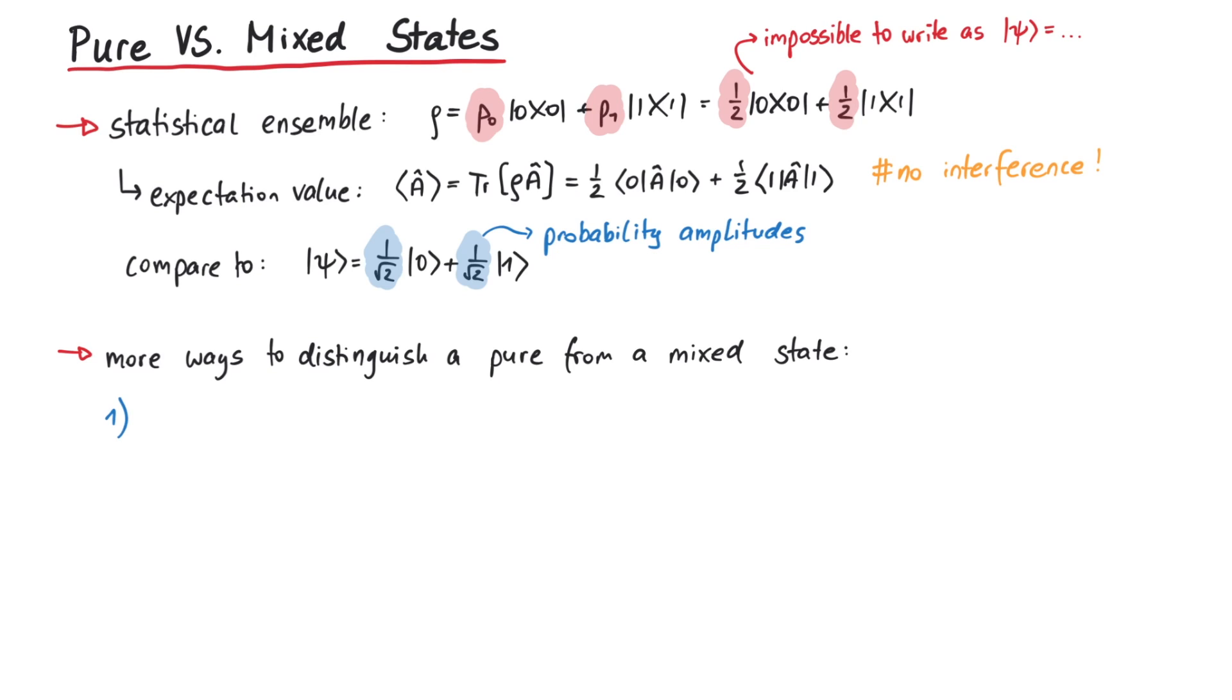First, mathematically, you can take the trace of the square of the density matrix. If the result is exactly 1, then you are dealing with a pure state. If the result is less than 1, rho describes a mixed state.